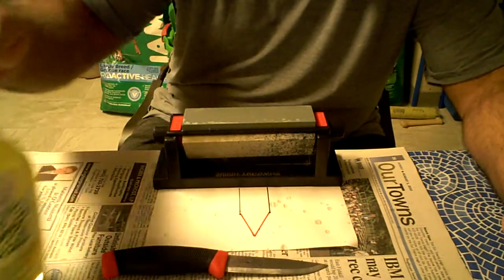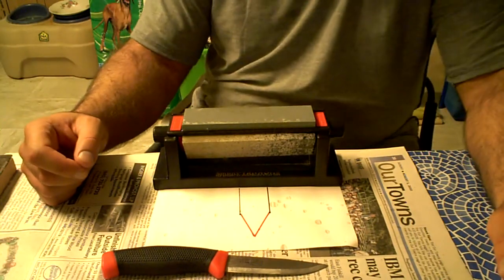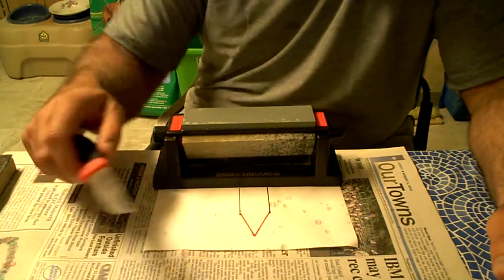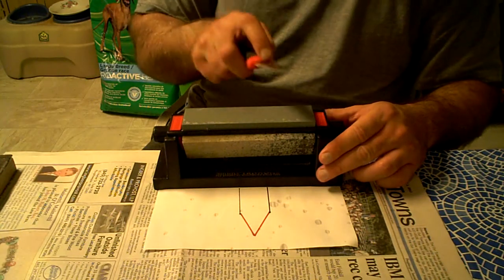So go ahead and get that good and wet. Again, I'm using simple green instead of oil. Easier to clean up and easier to keep the stone free from buildup of fine particles. So, let's start the sharpening.